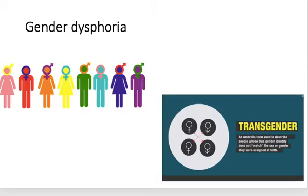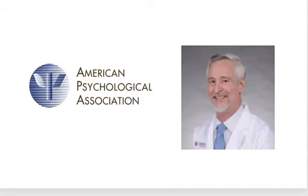However, there are some cases when one sees their genitalia not corresponding to the gender identity they feel. When this occurs, it sometimes leads to dissatisfaction with one's body, and this is called gender dysphoria.